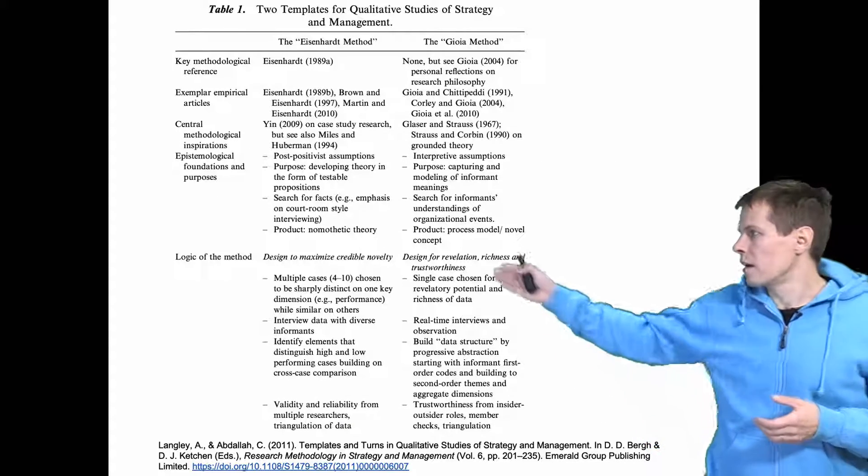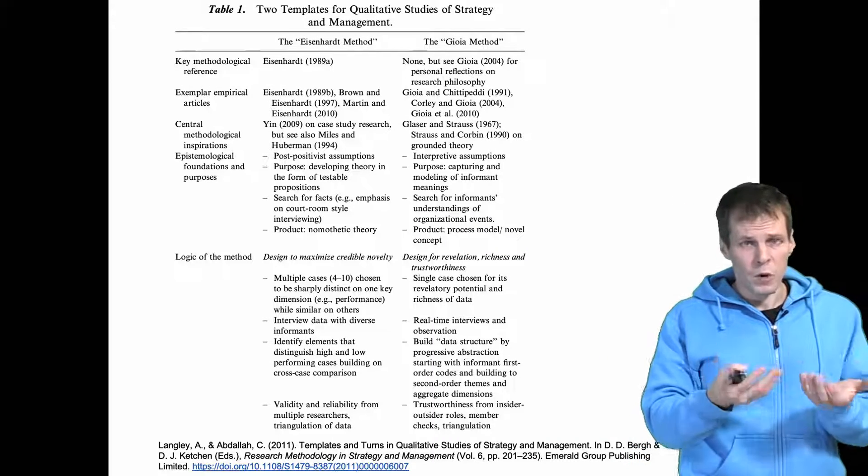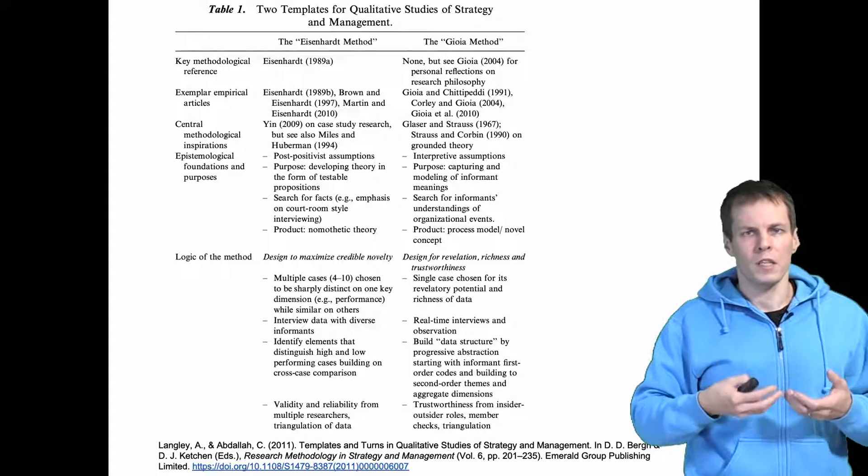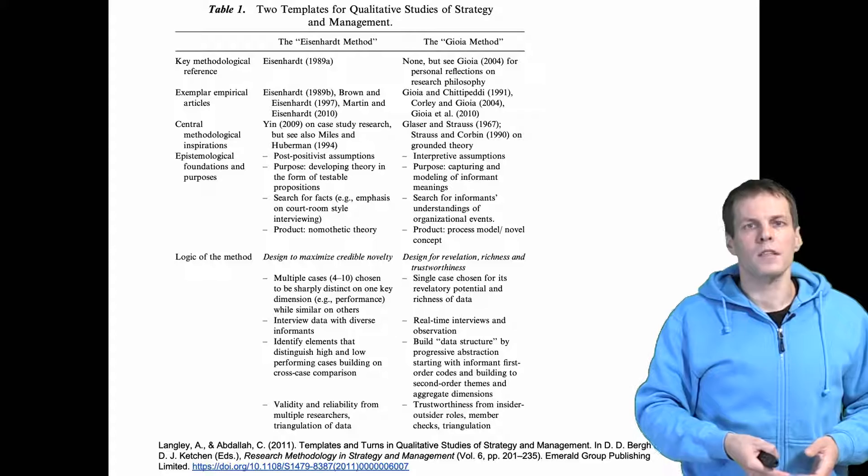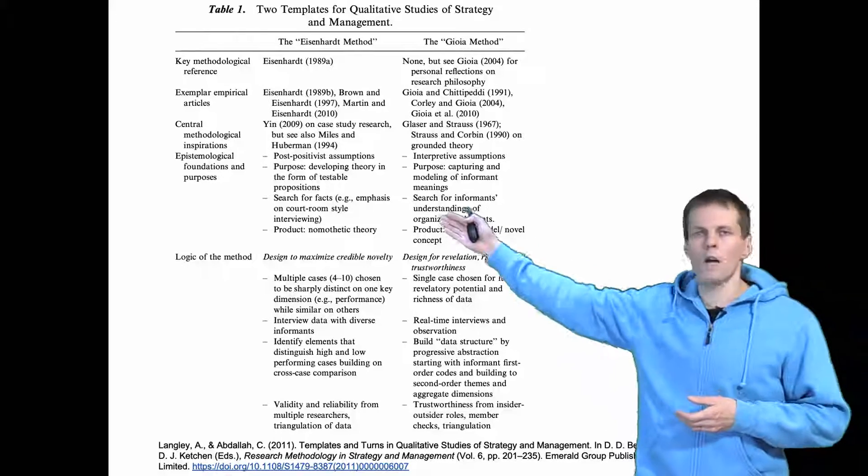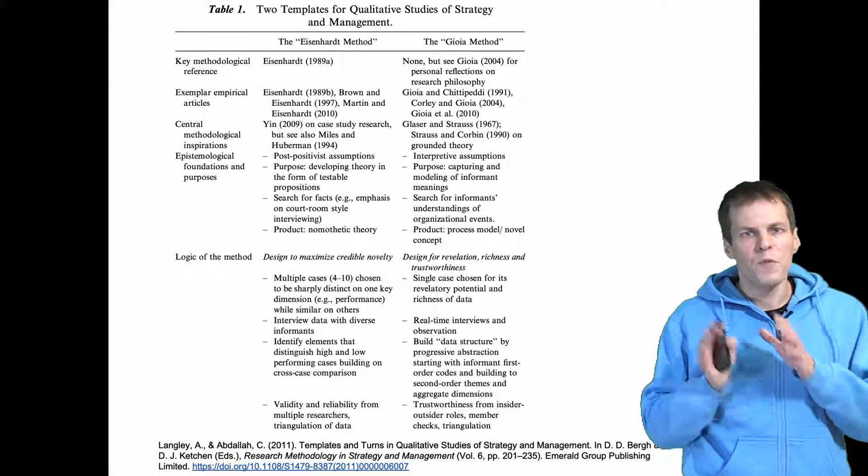We have the Eisenhardt method and the Gioia method and these have basically emerged when researchers have started to look at who has been able to publish qualitative research in leading journals and then started to imitate these authors. This Eisenhardt method is sometimes called post-positivist. I prefer to call it realist.